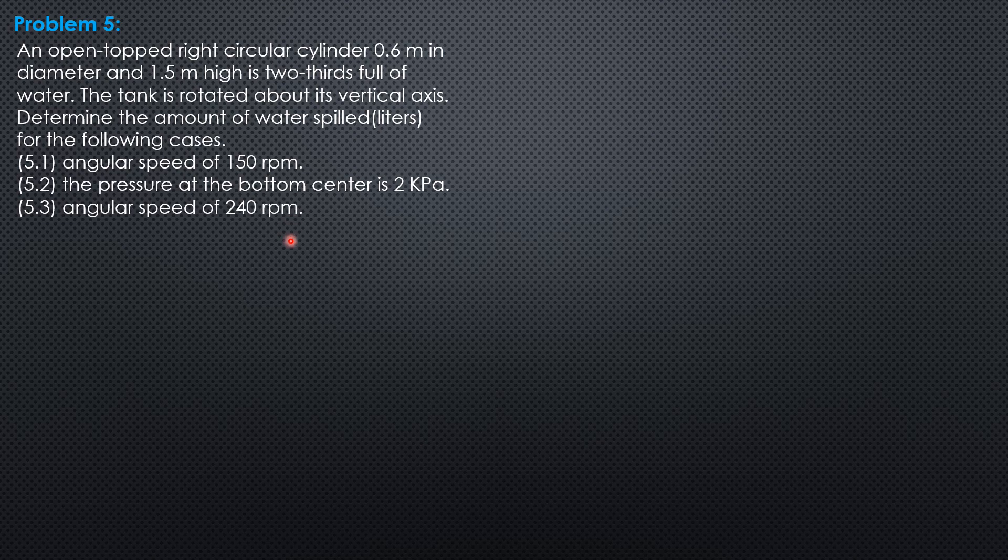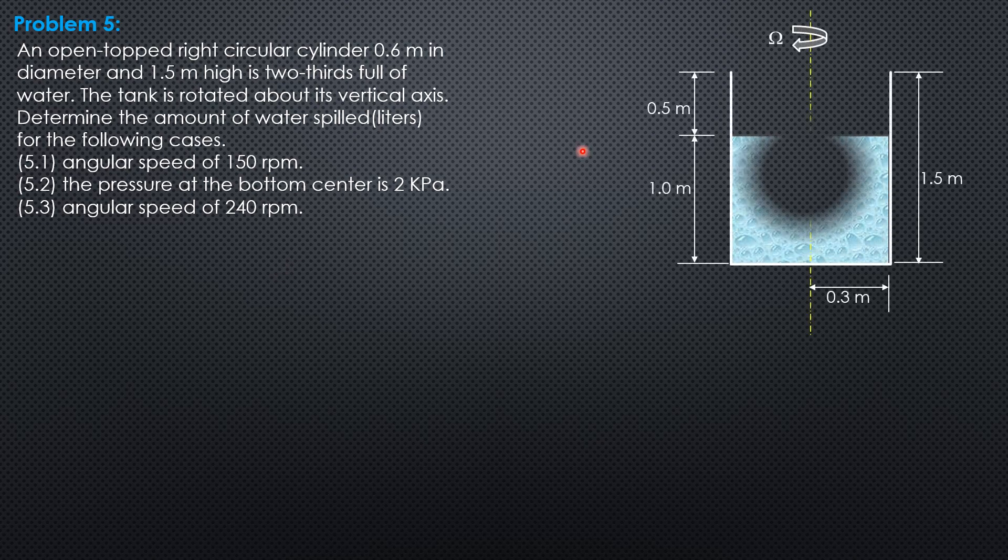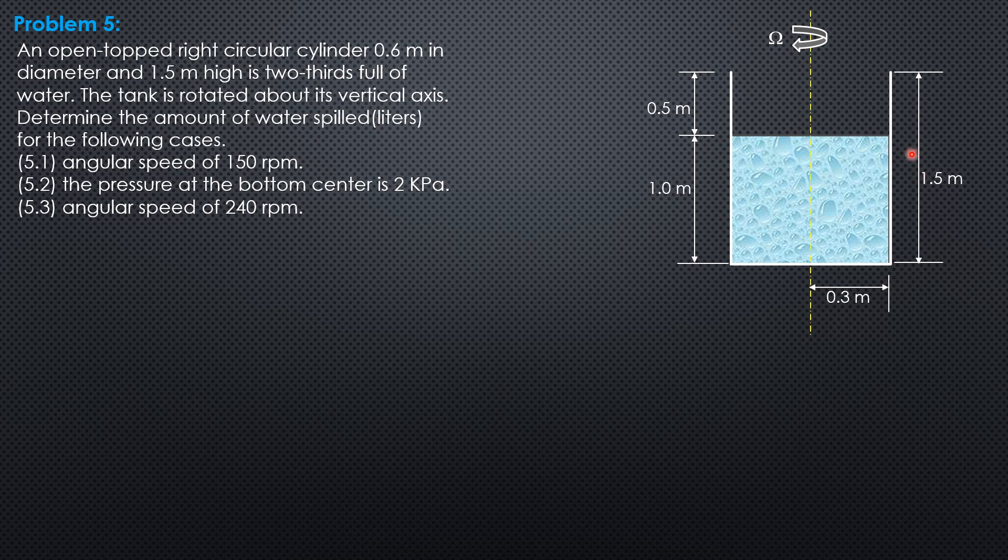Determine the amount of water spilled in liters for the following cases: angular speed of 150 revolutions per minute, pressure at the bottom center is 2 kilopascals, and angular speed of 240 revolutions per minute. Let's draw the figure first. Radius is 0.3 meters and height is 1.5. Two-thirds of 1.5 is 1 meter, so this empty depth is 0.5.